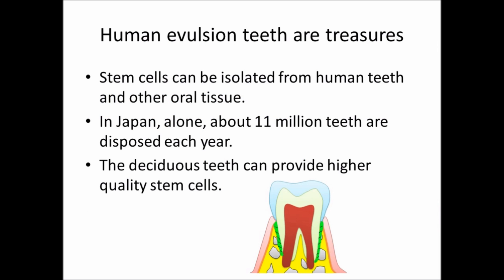Oral stem cells include oral epithelial stem cells and oral mesenchymal stem cells. These cells can be isolated from oral tissue including teeth and their surrounding or supporting tissue. In daily dental clinical practice, there are many oral tissues that come from patients, and they are usually disposed of as hospital waste. In Japan alone, about 11 million teeth are disposed of each year.